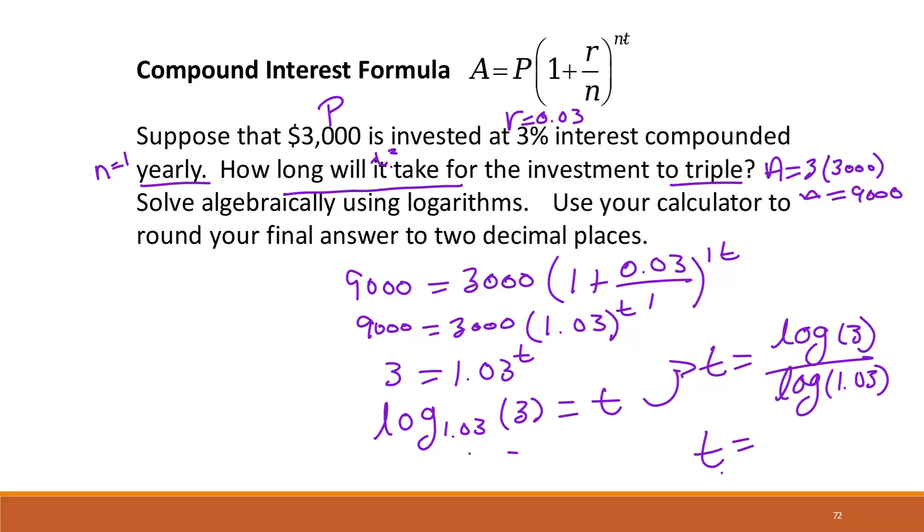And so you would get t is approximately 37.18 years. So that's how long it would take to triple the account.